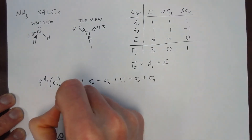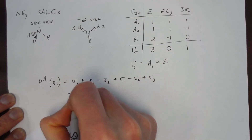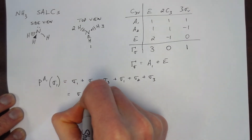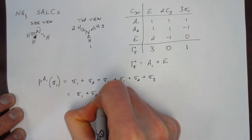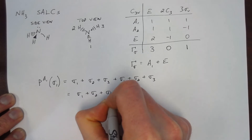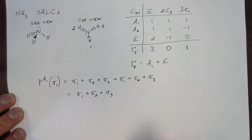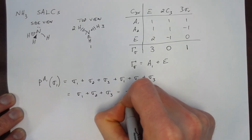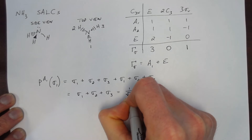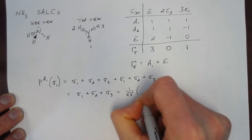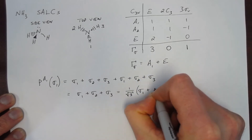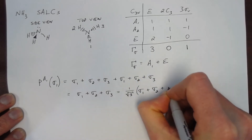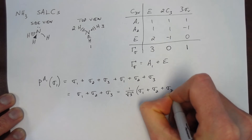This linear combination reduces to sigma one plus sigma two plus sigma three. Normalizing, we multiply by one over the square root of three, giving (1/√3)(σ1 + σ2 + σ3).